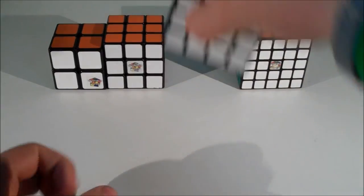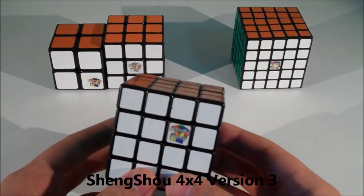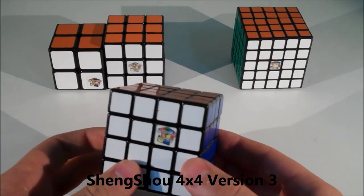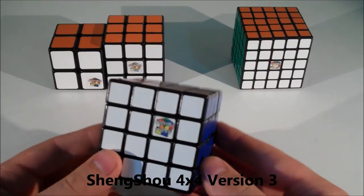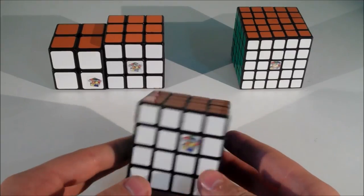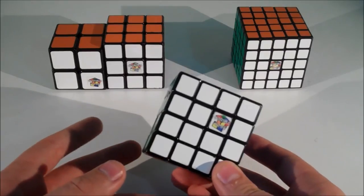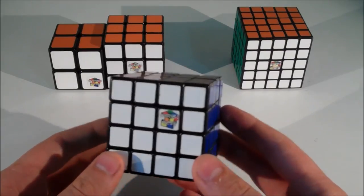For 4x4, I use the Sheng Shao 4x4 version 3. Now a lot of you may be wondering why I'm not using the Cubes UK 4x4. Well, first of all, the Cubes UK 4x4 is a white cube and I solve a lot better on black cubes.